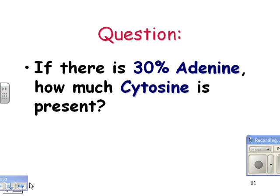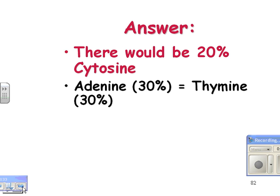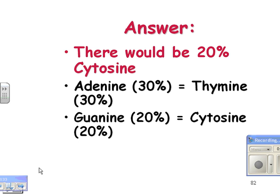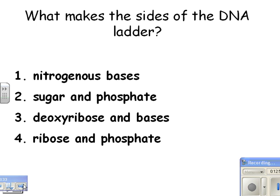Question: if there's 30% adenine, how much cytosine is present? We want to add up to 100%. 30% is A, and A equals T, so 30% is T. Together that's 60%, so we have 40% left for G and C. Split that between the two — that means 20% for each. The answer is 20% cytosine. Adenine and thymine would both be 30%, adding up to 60%, and guanine and cytosine would be 20% each, adding up to 40%. So 60 plus 40 equals 100%.